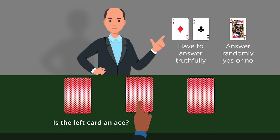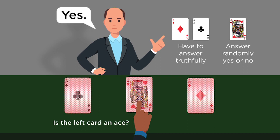But suppose you're pointing at the jack — then I'll answer randomly. But that's okay, since in this case the left and right cards are both aces. So if I answer yes, then you won't go wrong by assuming the left card is an ace. And if I say no, then you won't go wrong assuming the right card is an ace. Do you see the point? Regardless of what you're pointing at, you can interpret yes to mean the left card is an ace, and no to mean the right card is an ace. And I only ask you to identify one card as an ace.